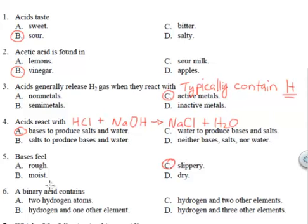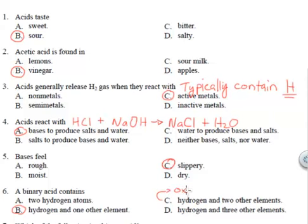Your bases should feel slippery — you can see that it's evident in bleach. A binary acid will contain hydrogen and one other element. If it contains hydrogen and two other elements, this would be an example of an oxy acid when one of those two is oxygen.